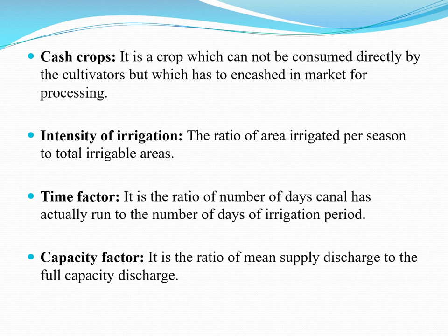Next is intensity of irrigation: it is the ratio of area irrigated per season to the total irrigable area. Next is time factor: it is the ratio of number of days of irrigation. Last is capacity factor: it is the ratio of mean supply discharge to the full capacity discharge. These are some technical terms used in crop water requirement.